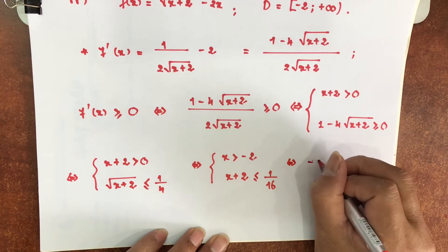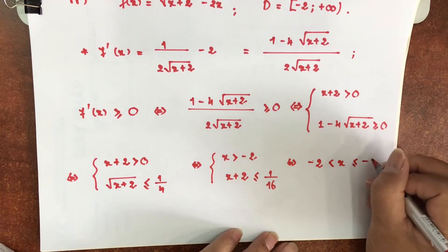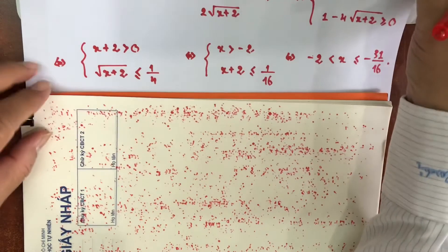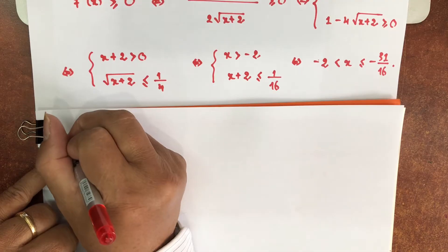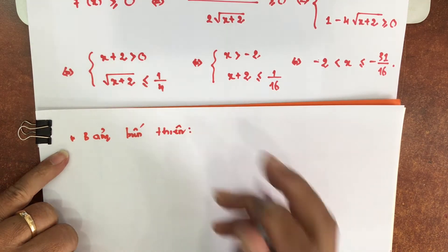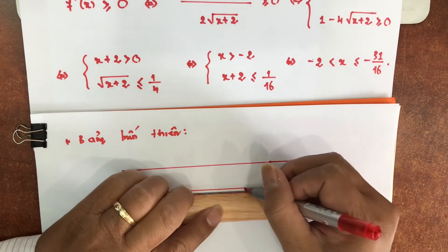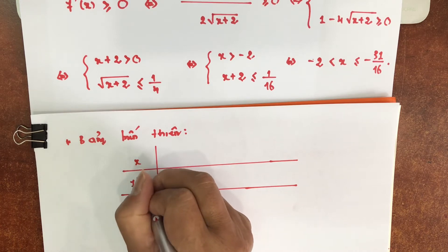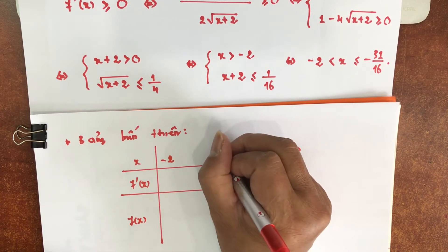Như vậy các anh chị thấy là x đi từ trừ 2, nhỏ hơn hoặc bằng 1 phần 16 mà trừ 2. 1 mạch trừ 32 là trừ 31 chia 16. Bảng biến thiên. X đi từ trừ 2 đến cộng vô cùng và giá trị x làm cho đạo hàm bằng 0 là trừ 31 chia 16.